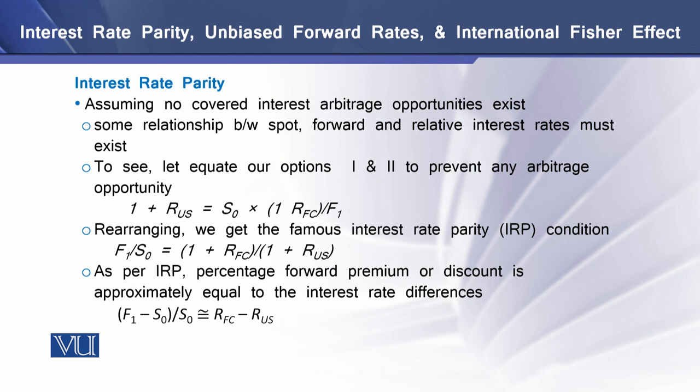We have an equation where the left-hand side is (1 + R_US), which is the interest rate of the US, and that is equal to the spot exchange rate multiplied by the relationship between the interest rates of the two countries.